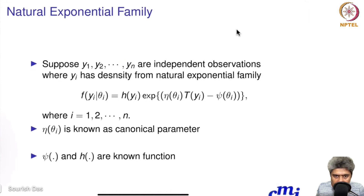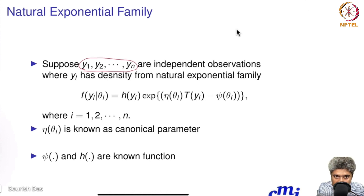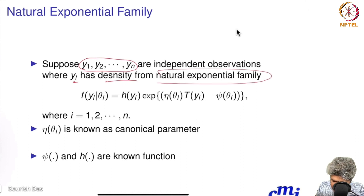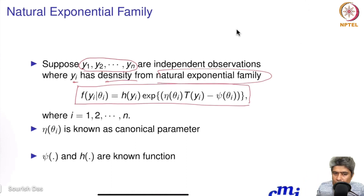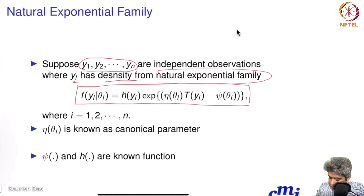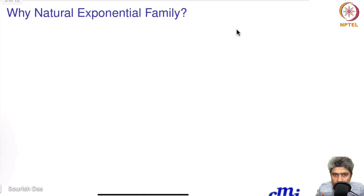The Natural Exponential Family is a class of distributions. Suppose you have a bunch of random variables y1, y2, ..., yn that are independent observations, and each yi has a density that can be cast into a specific functional form. We'll talk about what this functional form is and why we want to study the Natural Exponential Family.